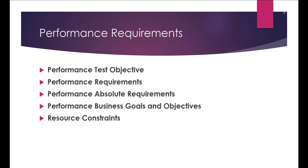While gathering performance testing requirements, we need to take special care about the test objective, which forms the basis of deciding what type of performance test needs to be done. The test plan and test report should reflect this objective. Performance requirements show the expected performance levels of the application under test. Performance absolute requirements include criteria for contractual obligations, service level agreements, or fixed business needs. Performance basic goals include criteria desired in the application, but variance in these can be tolerated under certain circumstances.